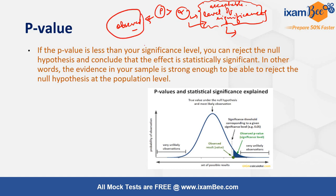If your p-value is less than the alpha value, you reject the null hypothesis. In the diagram, the significance threshold corresponding to the significance level and the observed p-value — shown by the green dot — clearly show that the p-value area is less than the alpha area. In this case you reject the null hypothesis and conclude that your test was statistically significant.